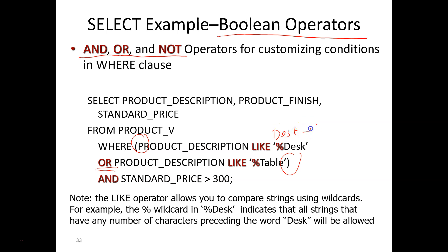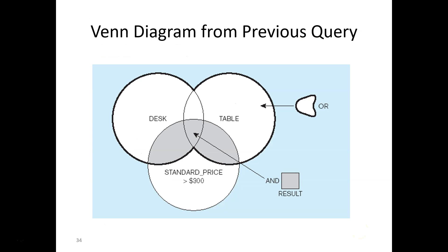Then there is another condition: the standard price must be greater than 300. So basically what it's saying is the condition to include the record would be they have to either be a desk or a table, and the price has to be greater than 300. It can get somewhat confusing if you have too many boolean operators in your statement. The easiest way to understand this is to use a Venn diagram, as you will see in this slide here.